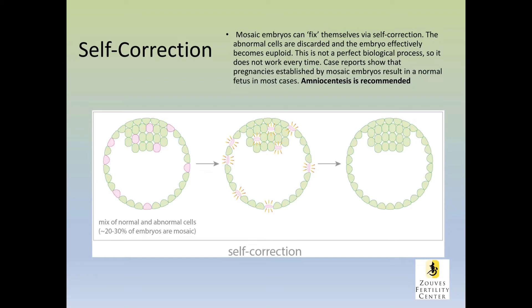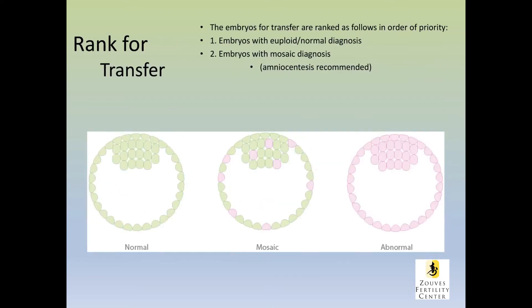The only caveat here is that when we get pregnant from a mosaic embryo, we do need to do amniocentesis to be absolutely sure that the developing baby is normal. This testing allows us to rank embryos from normal to the intermediate, which is mosaic, to the other extreme, which is abnormal. Clearly, if available, we should transfer a normal embryo first, a mosaic embryo second, and very rarely ever transfer an abnormal embryo from the platform of NGS.